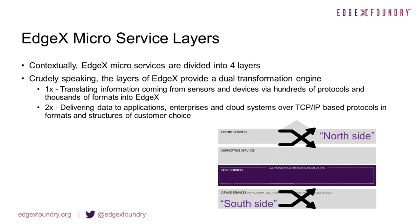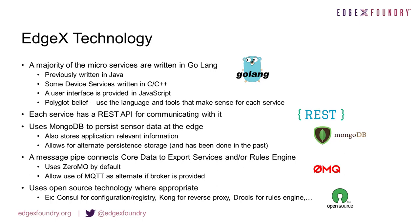In essence, EdgeX is a dual transformation engine. The device services — what we refer to as the south side services in EdgeX — speak multiple protocols and translate sensor and device data to a common EdgeX format for local short-term persistence. From there, the collected IoT data set is transformed to any number of other formats by the export services for communication to your cloud, enterprise, or other intelligence harvesting systems, where data can be turned into information that can be acted on, or what we call actuated.